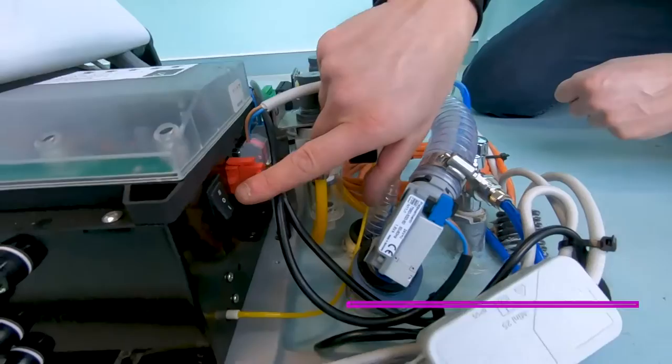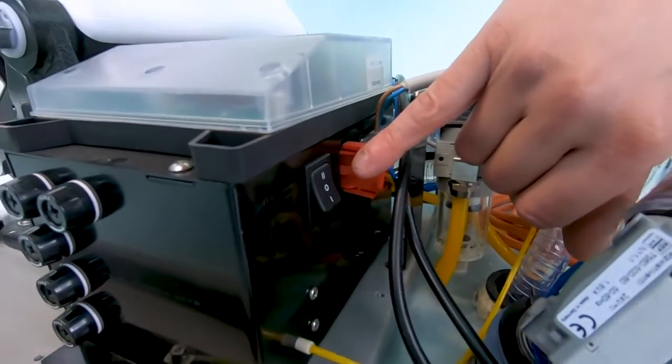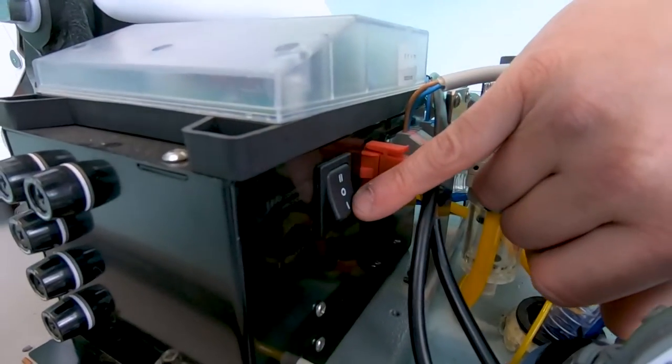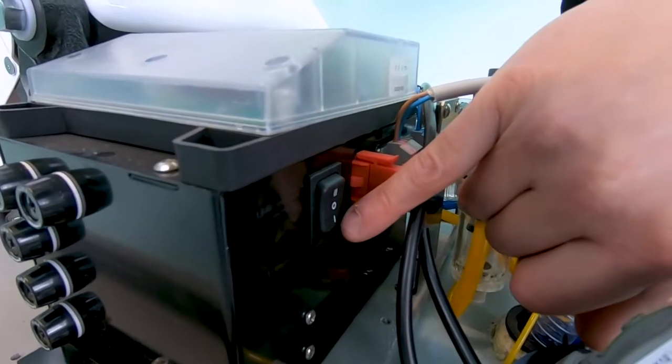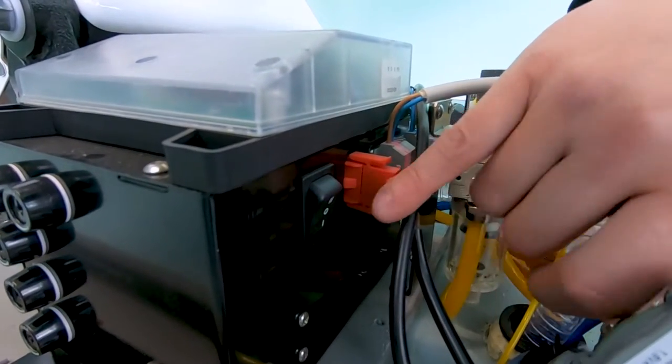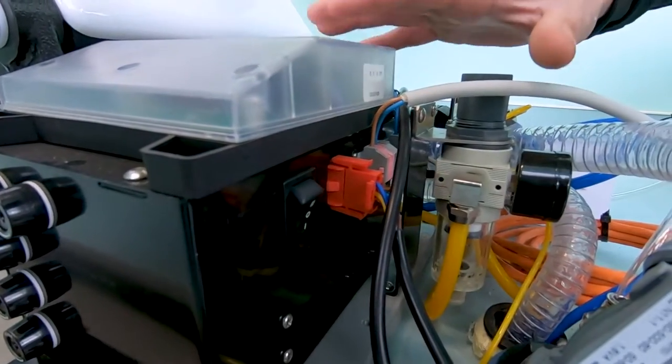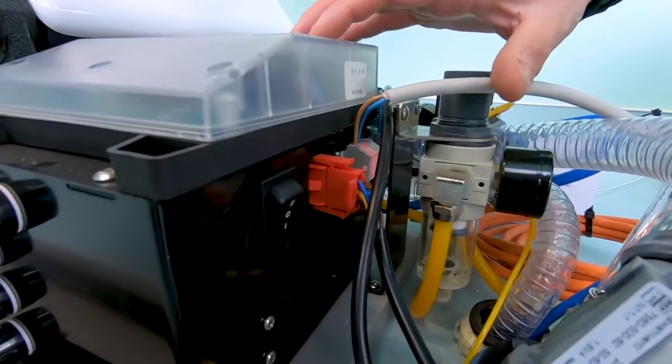One important thing to remember: if you have here a button with position number 0, 1, and 2, position 0 turns off the unit. In position number 1, we activate the electricity immediately.